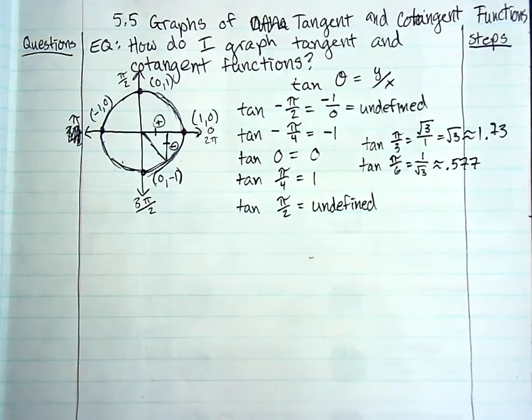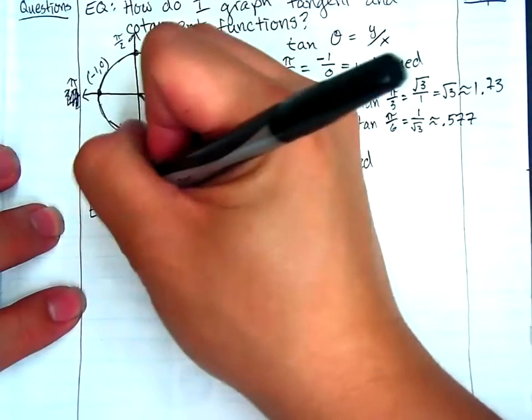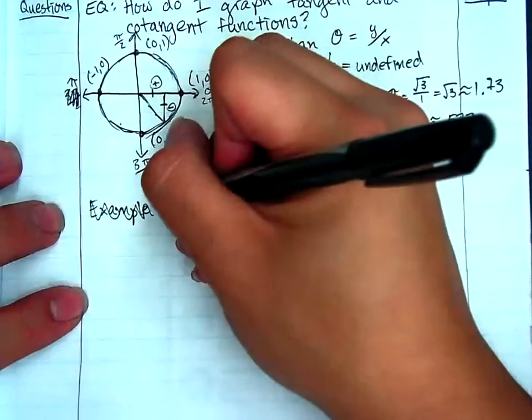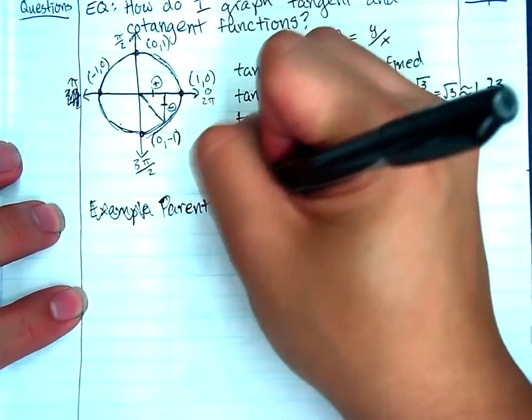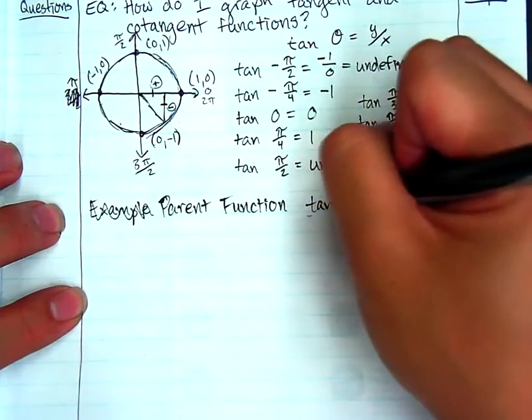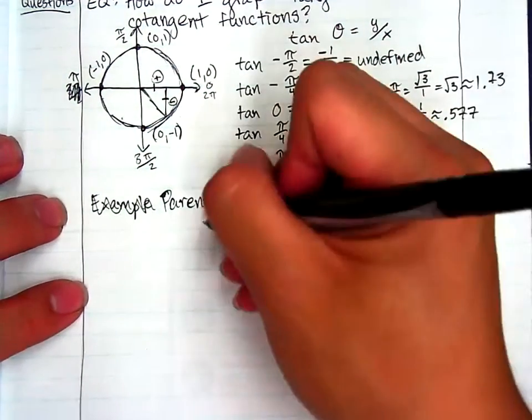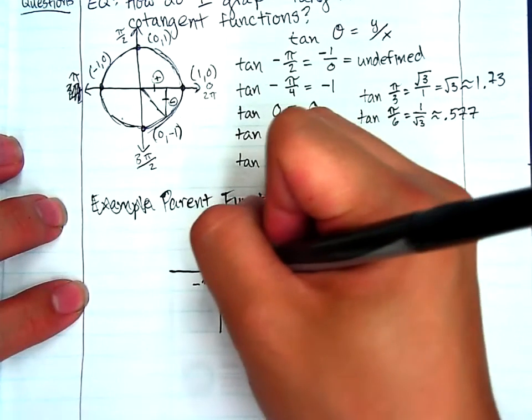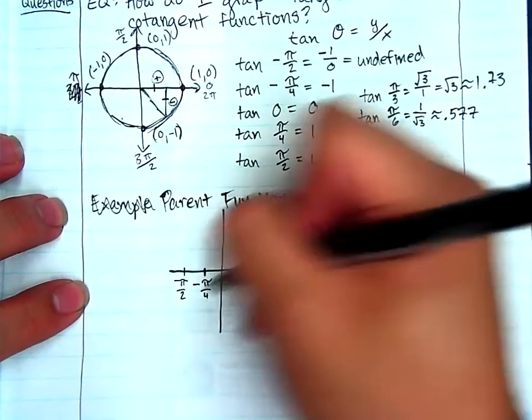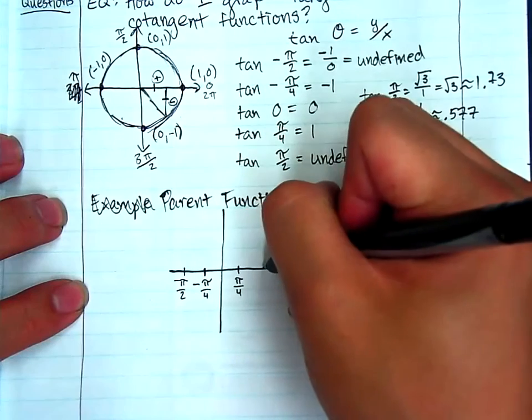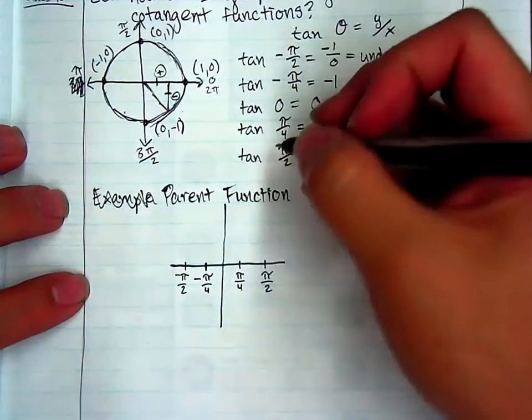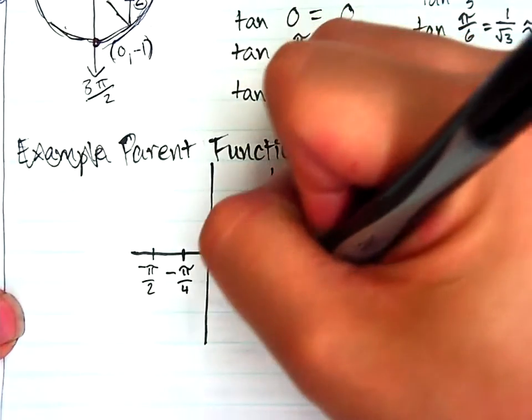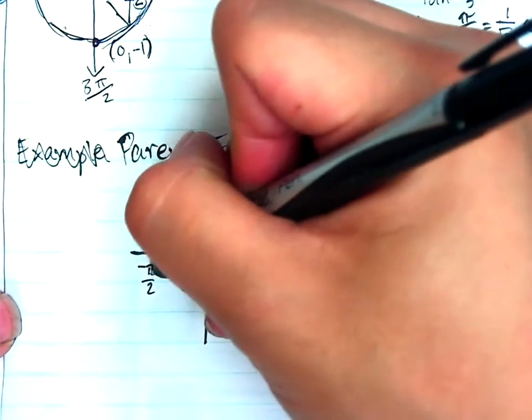So we're going to go ahead and use these values to go ahead and sketch the parent function. So we're going to go ahead and sketch the parent function, parent function tan x. I'm going to have negative pi over 4 and negative pi over 2, pi over 4 over here, and then pi over 2 over here. Wherever my function is undefined, I'm going to go ahead and draw in the dashed lines. Because that's where my function will not cross and we're going to be asymptotic to it. In other words, we're going to glide right along it but never actually touch it.